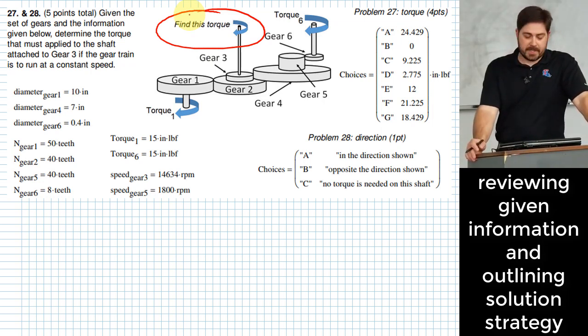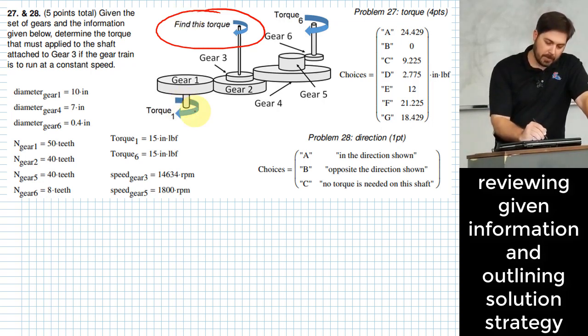Okay. So let me give you the basic kind of strategy that I'm going to try to go for here. And that is, I want to determine how much torque torque one implies in terms of the effect that happens on this middle gear. Okay. That way I can figure out how much torque am I going to need to apply to resist that.